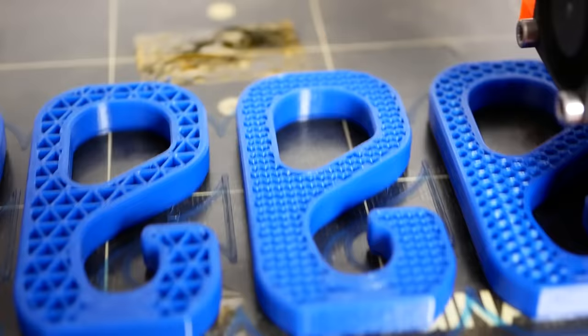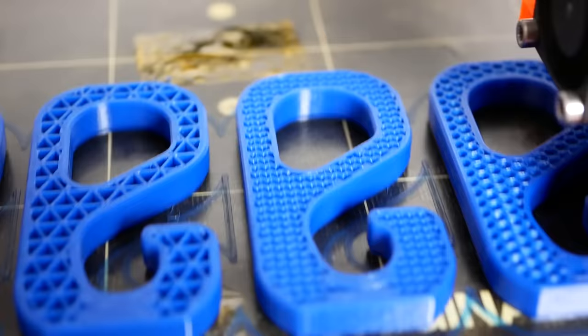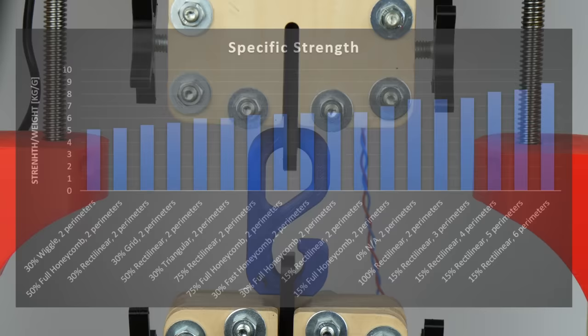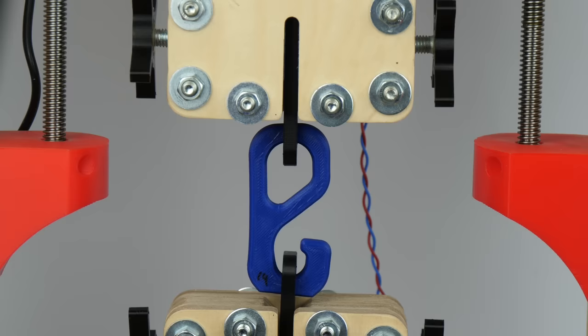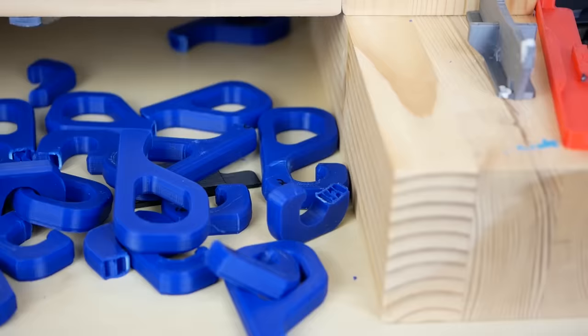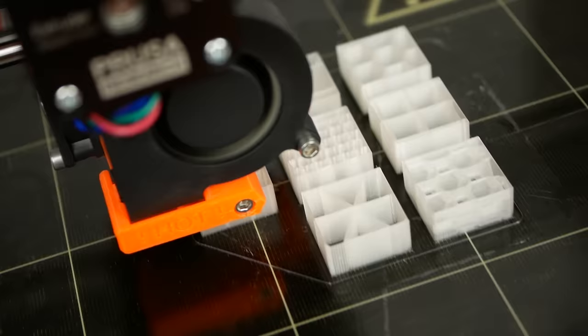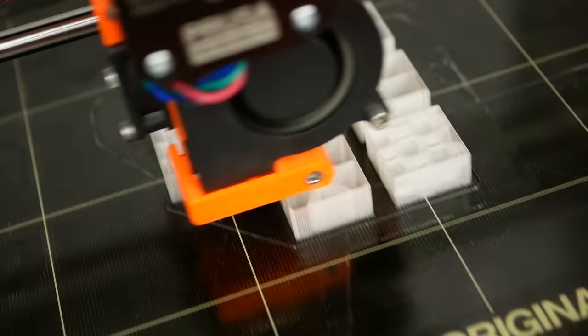In a previous video I've already been taking a look at the strength of different infill structures that you can find on Simplify3D and also talked about why it's more efficient in many cases if you increase the number of perimeters instead of increasing the infill percentage. If you haven't seen it yet, there's a link in the description. I wanted to do a bit more research in this direction and especially find out how different patterns behave in different directions, because often you can't orientate your part in a way that is perfect for the chosen infill.